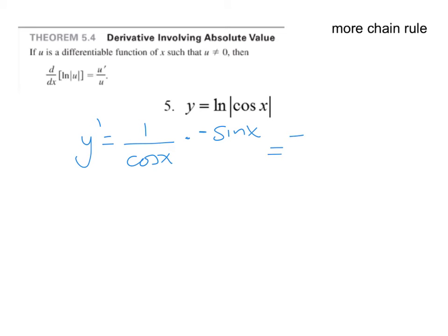If you'll recall, negative sine x over cosine x is negative tangent x. So whether it has the absolute value there or not, basically what it's doing is keeping that argument positive. You don't treat it any differently.